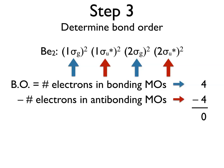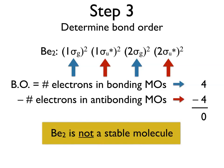A bond order of zero means there is no bond between the two beryllium atoms, and therefore Be2 is not a stable molecule. For every electron added to a bonding orbital that stabilizes the bond, there is another electron with the exact opposite energy going into an anti-bonding orbital that destabilizes it, thereby not fostering the formation of a molecule.